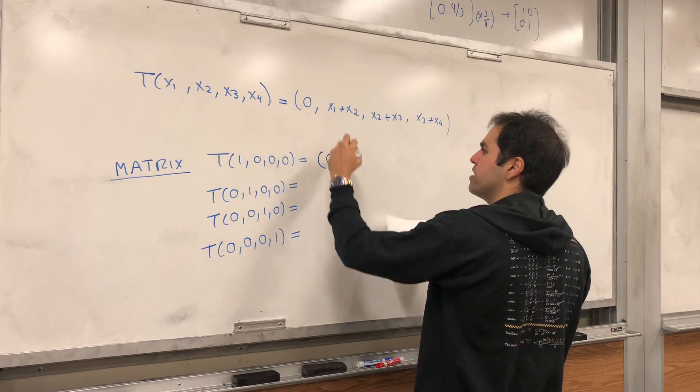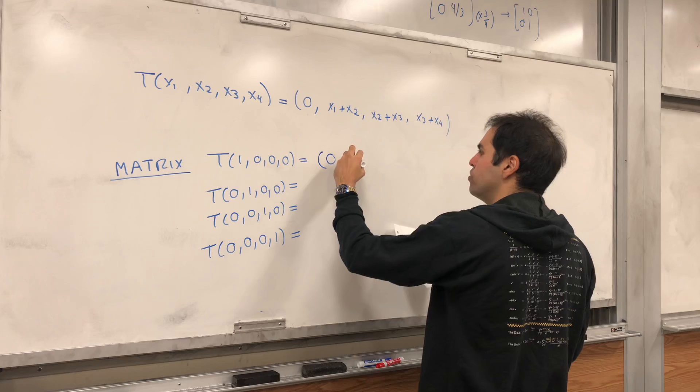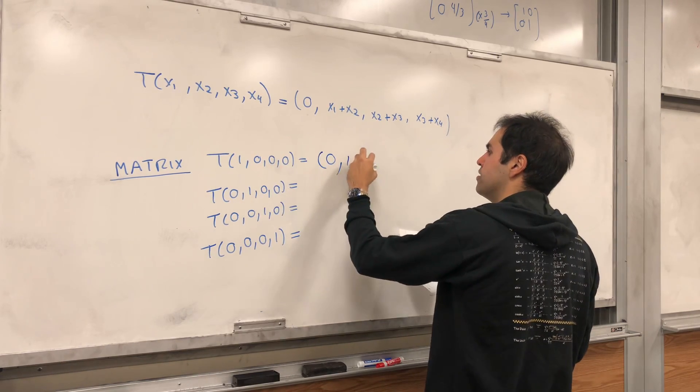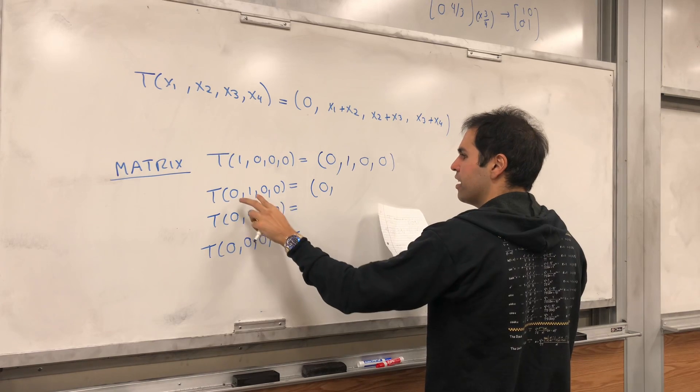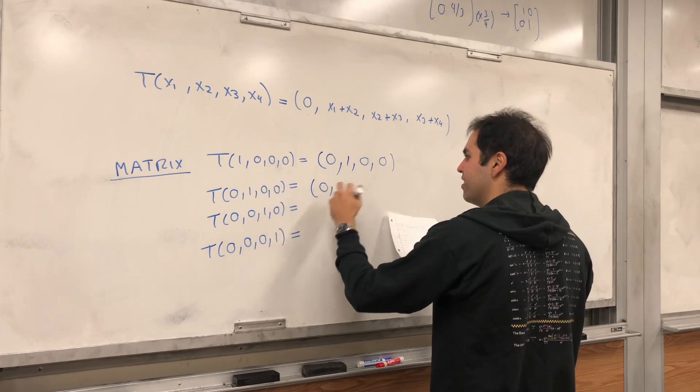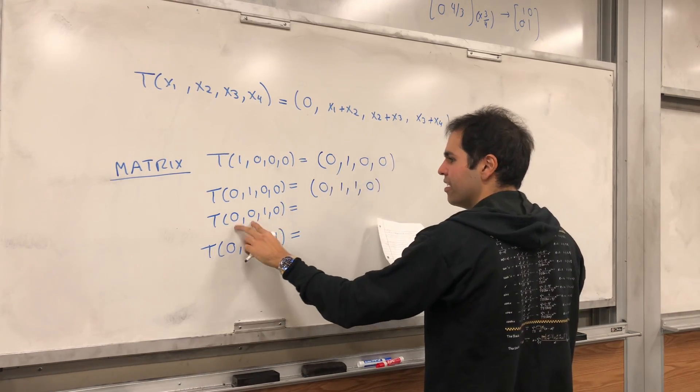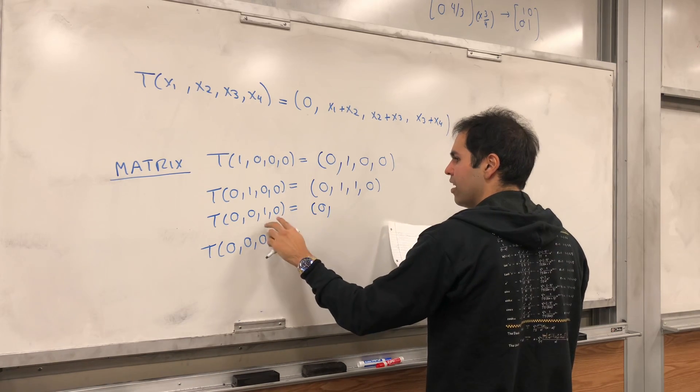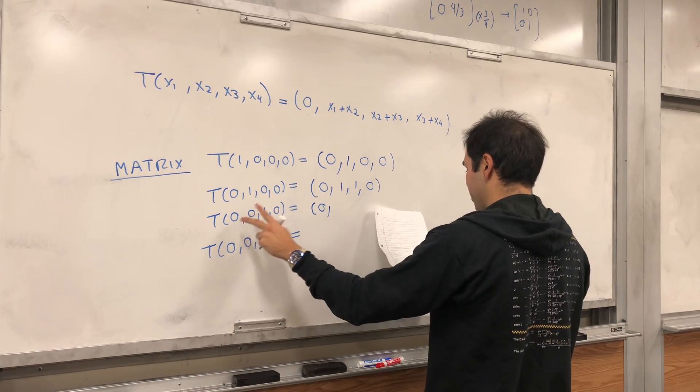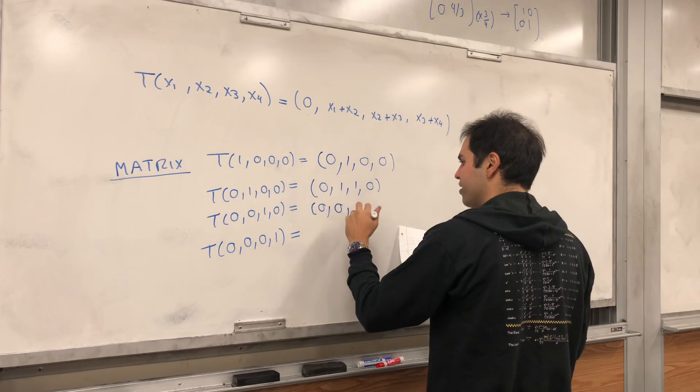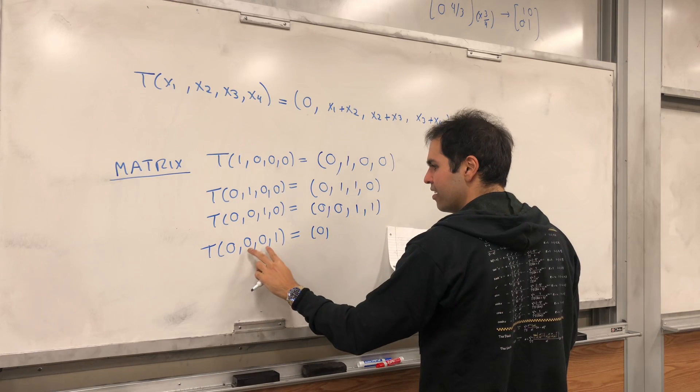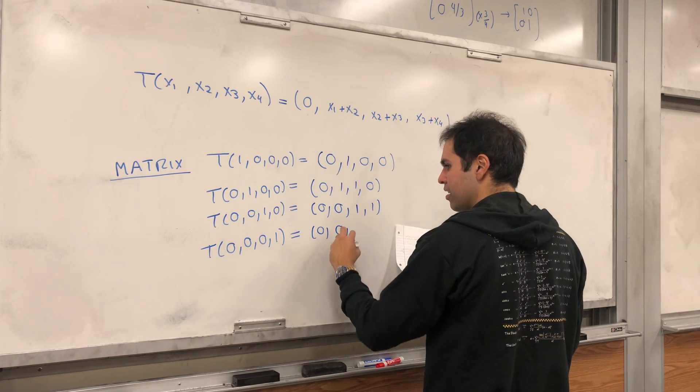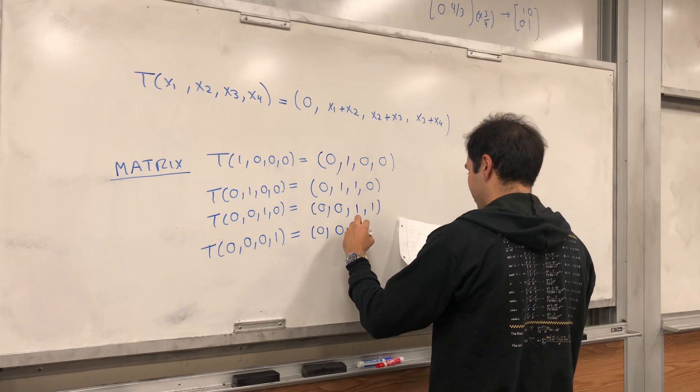If you do that, we get, again, first thing is 0 and then you add those two up, 1,0,0, and then 0, and then 1,1,0, 0, sorry, 0,0,1. And lastly, 0,0,0,0,1.